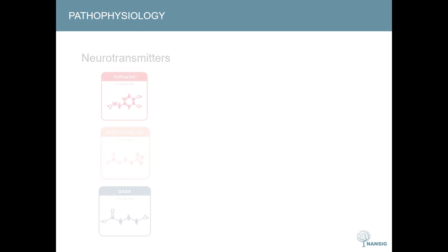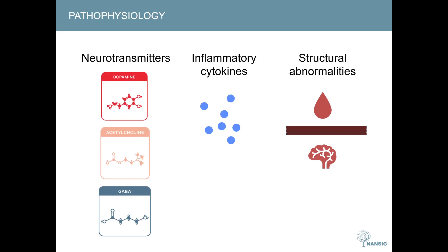There exist several theories which try to explain the onset of delirium; we will discuss three of them. The first pertains to neurotransmitters. Patients with delirium often have raised levels of dopamine, which is why antipsychotics such as haloperidol are often used in therapy. It is also thought that low levels of acetylcholine may trigger delirium, which is why medications like anticholinergics are often avoided. Finally, GABA — an inhibitory neurotransmitter — often has decreased levels in delirium, and this may be brought on by things like benzodiazepine use or alcohol withdrawal.